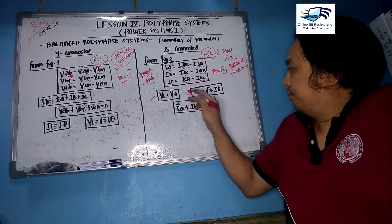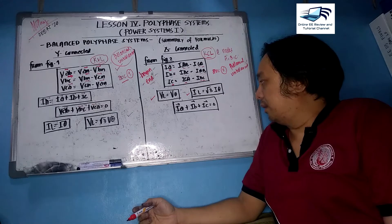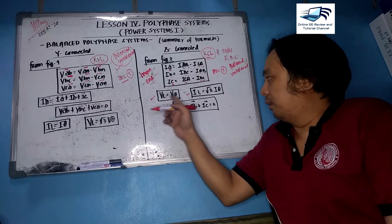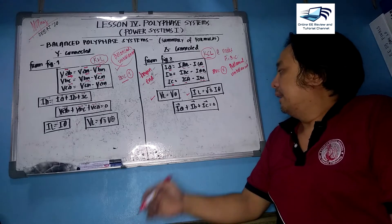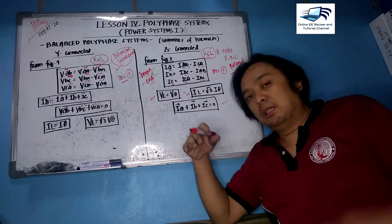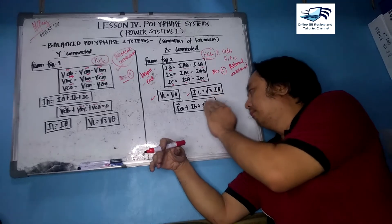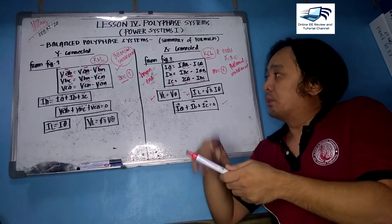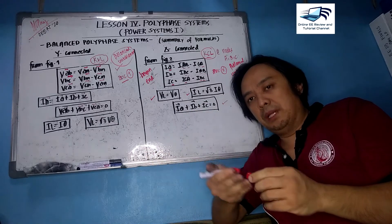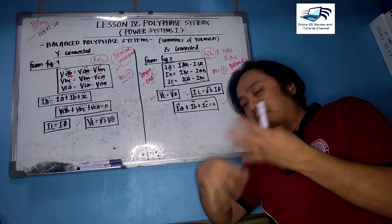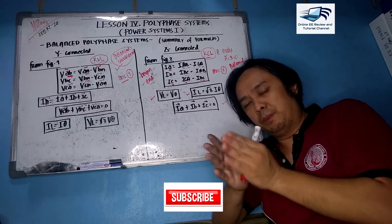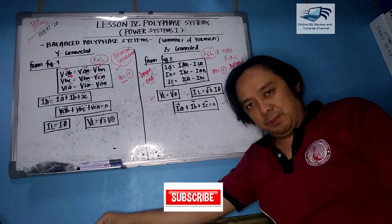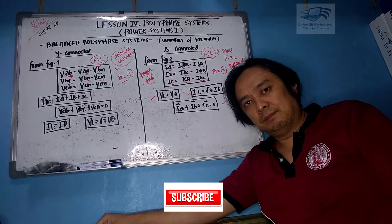The delta system relationships are: line voltage equals V-phase; IL equals the square root of 3 times I-phase in terms of magnitude; and the vectorial sum of line currents equals zero. These are very important formulas for problem solving on balanced polyphase systems. We can now solve problems on balanced polyphase systems. Thank you and maraming salamat po.